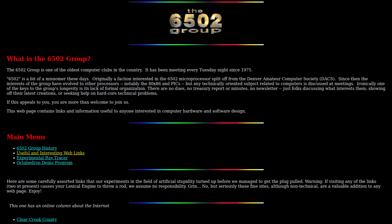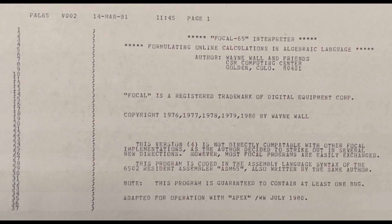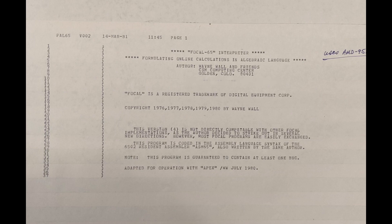Wayne was indeed the principal author of Focal and one of the founding members of the 6502 group in Denver. He kindly gave me access to various software that the group has, and he put into my possession the source code for version 4 — the Apple II version — which also had many options for a math coprocessor to do some really great math. Yes, the source code. This is for Apple II, version 4, finished in the summer of 1990 by Wayne Wall and friends at the Colorado School of Mines Computing Center in Golden, Colorado.